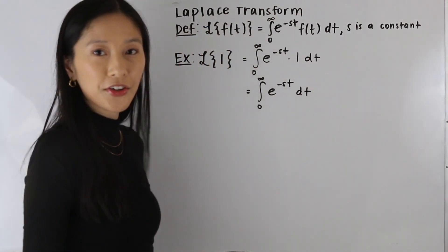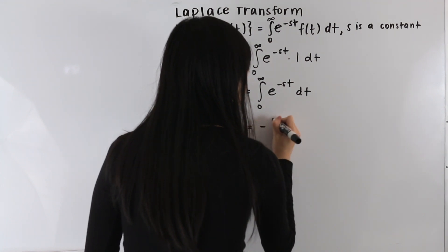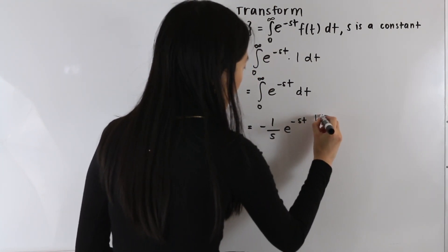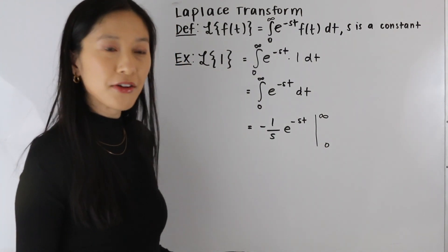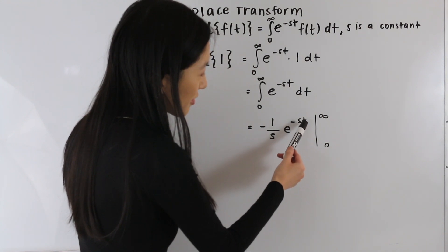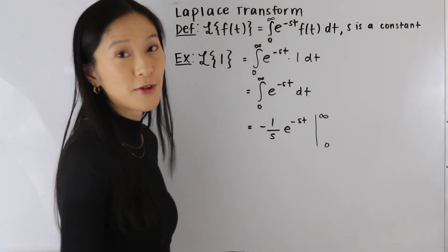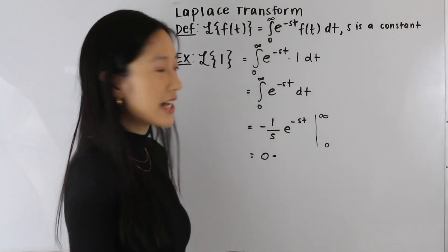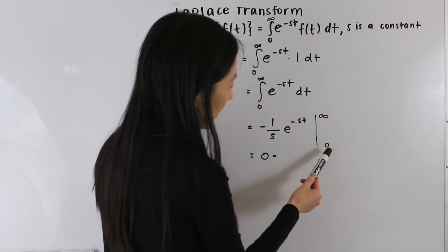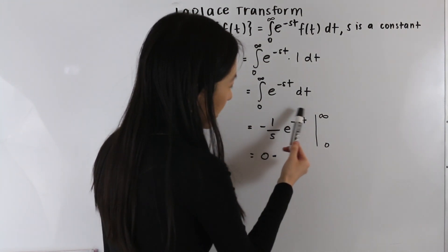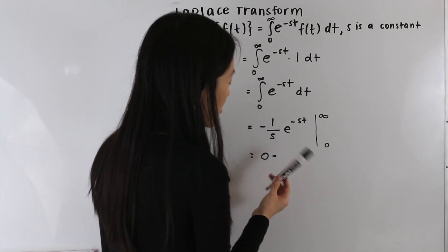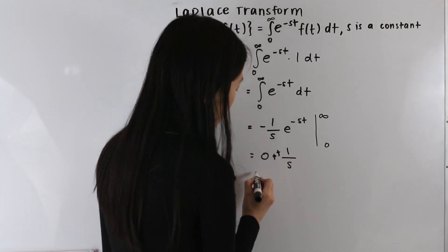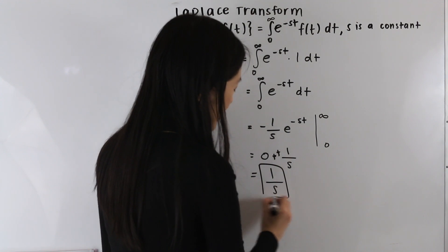Now let's go ahead and take its integral. Integrating, we end up with negative 1 over s times e to the negative st, evaluated at infinity and zero. Taking the limit as t approaches infinity, the exponential function approaches zero, so the first term is zero. Plugging in zero for t, e to the zero equals 1, so we're left with negative 1 over s. We have zero minus negative 1 over s, and the minus and negative sign become a plus, giving us 1 over s. That is our final answer.